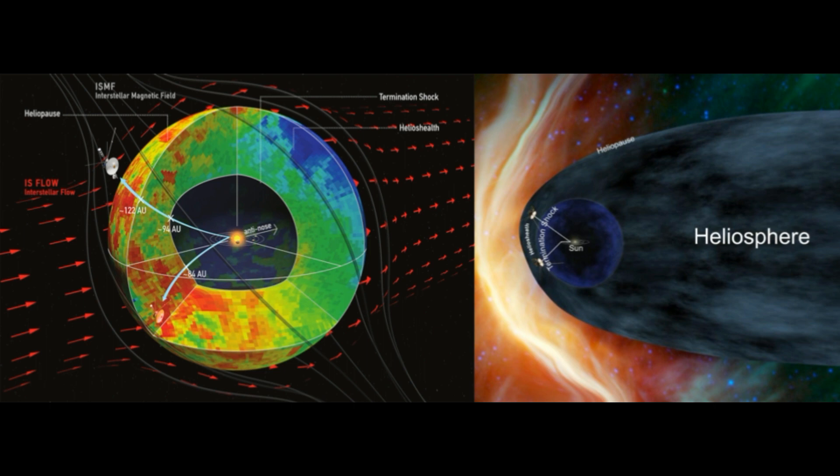As we continue to gather data from the edges of the heliosphere, this data will help us better understand the interstellar boundary that helps shield the Earth environment from harmful cosmic rays.